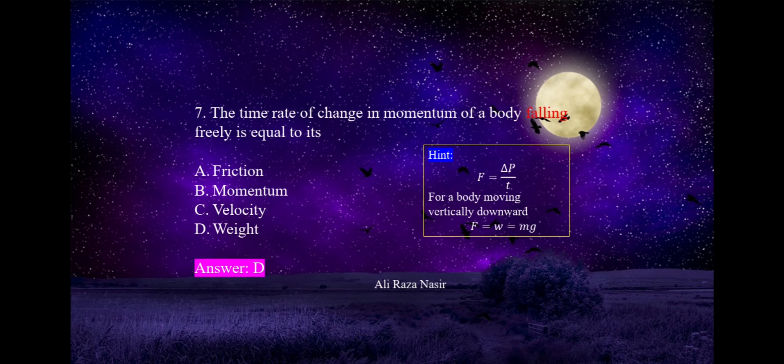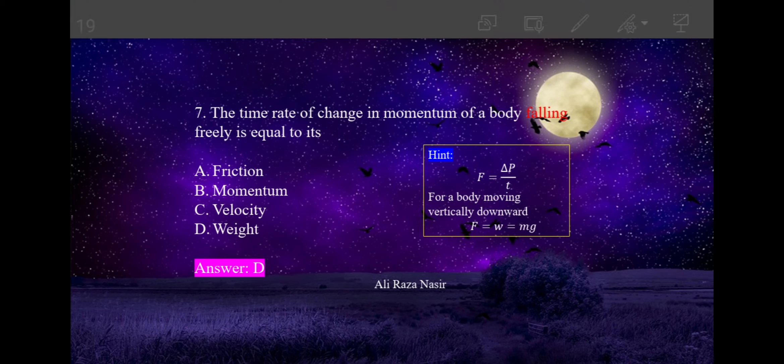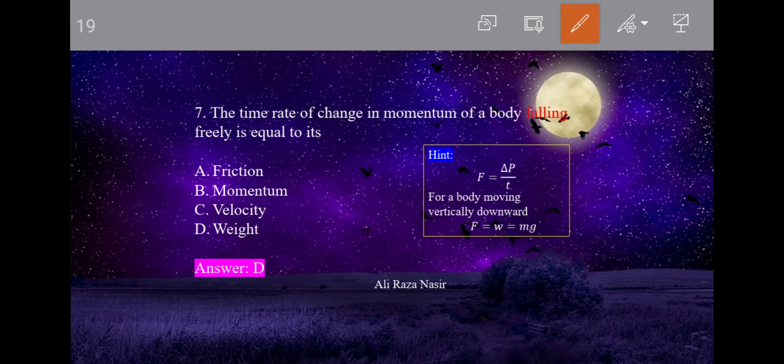Next: the time rate of change of momentum of a body falling freely is equal to — force is the rate of change of momentum. When a body moves vertically downward, the force acting downward is its weight due to gravity. So the rate of change of momentum equals the weight of the body. Option D is correct.